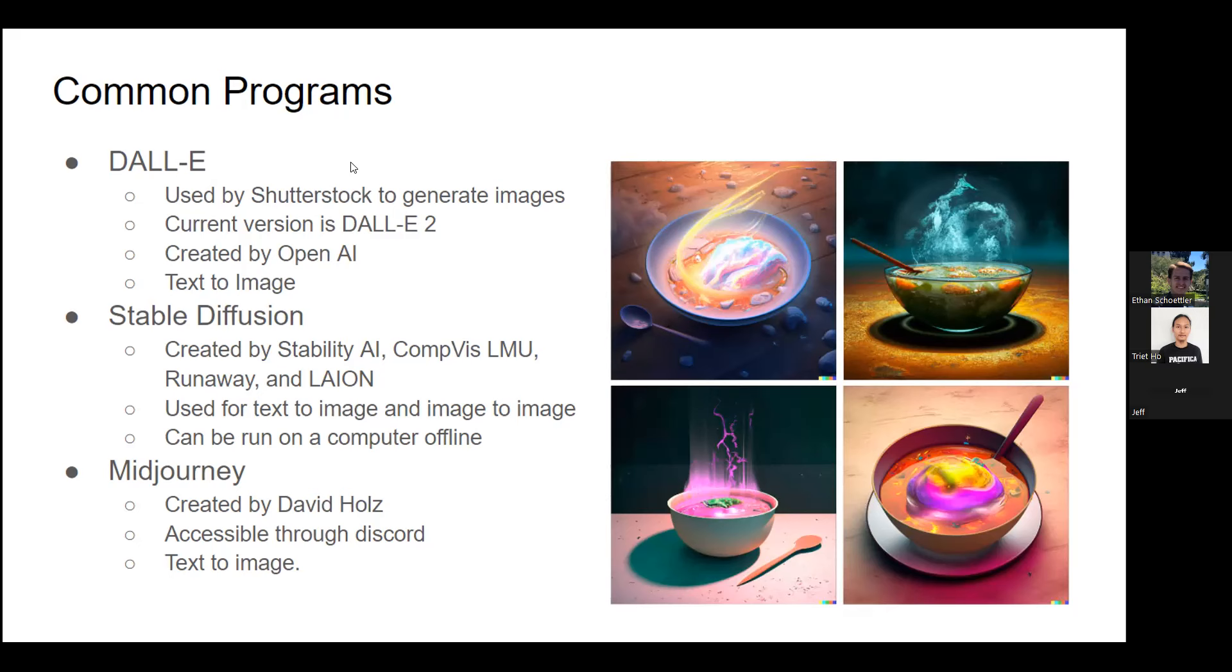Stable Diffusion is created by Stability AI and a few other companies mostly based in England. It's used for text to image and also image to image translation where you can give instructions and it will transform an image to another image, like make a drawing into a live action scene. What's cool is you can download it online and run it on your computer without actually having to be connected with the big servers. Midjourney was created by David Holtz and you can only get it through Discord - you tell it what you want to make an image of and it will do it.